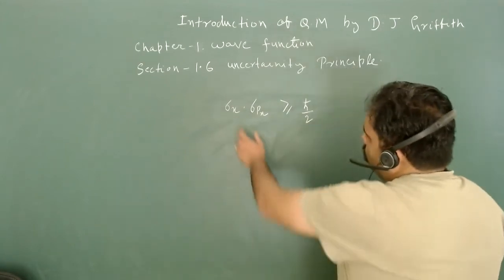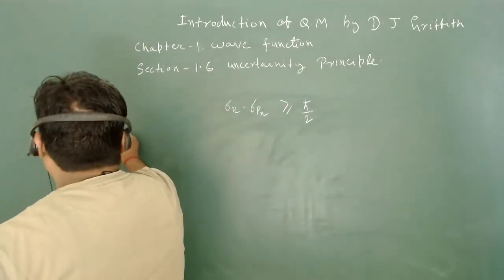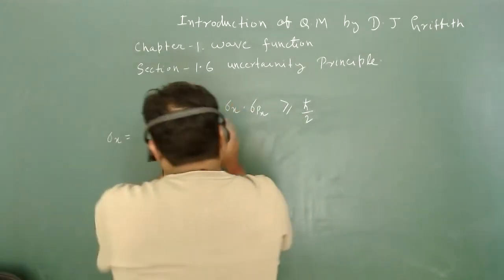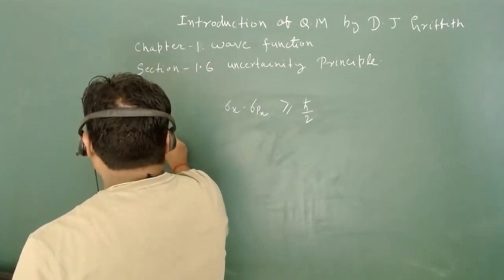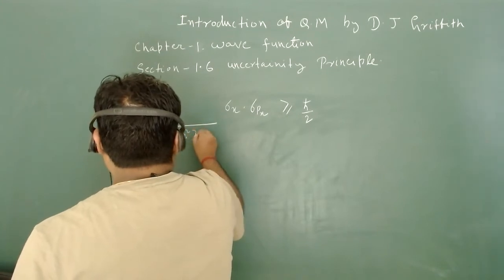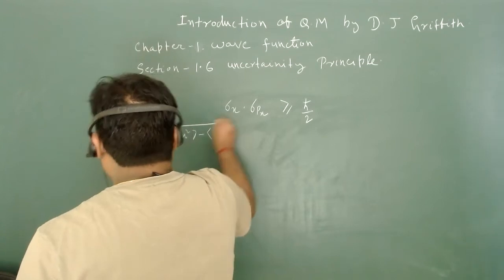What is sigma_x? It is the standard deviation, or the error in measurement of position, which is equivalent to the expectation value of x squared minus the expectation value of x, whole squared.